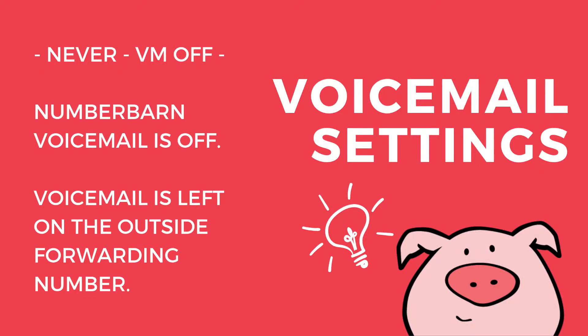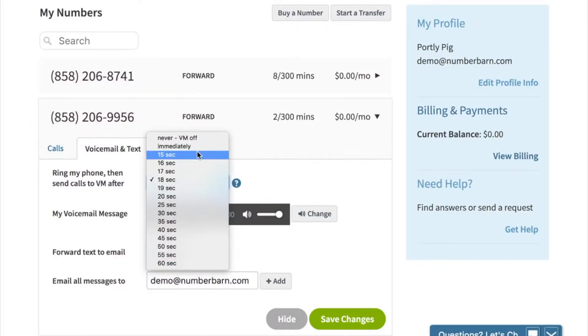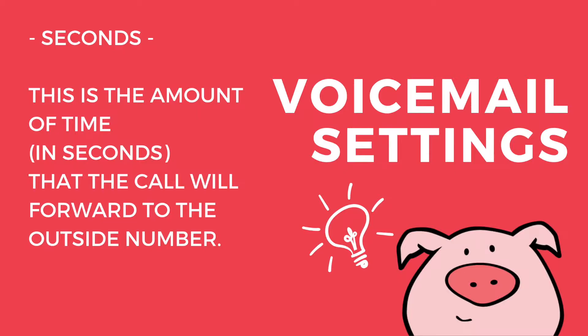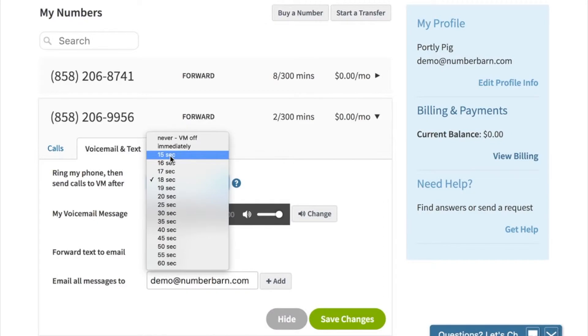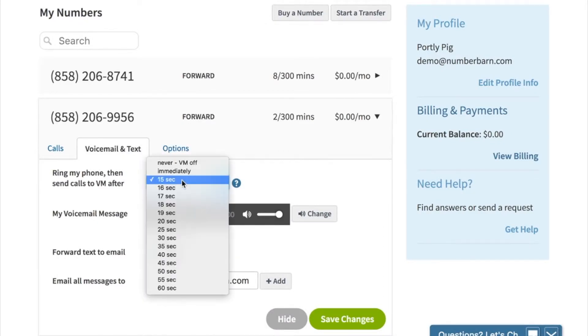Never — voicemail off — means that voicemail messages will be left on the outside number. If you choose immediately, calls will be forwarded immediately to voicemail and will not ring the outside number. If you choose one of the seconds options, this is the ring time that the call will ring to the outside number before it goes to voicemail. On average, 15 seconds is about the amount of time you'll want — it's about two or three rings. But if you want a longer time, you can select that amount of time.